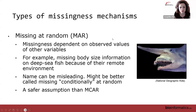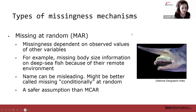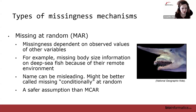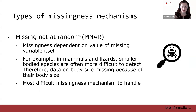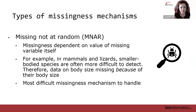An example of missing at random might be if we're missing body size information on deep sea fish because of their remote environment — we're missing it not because of body size but because they're just hard to access and study. There's an opinion in the literature that the name 'missing at random' can be misleading and it might be better called 'missing conditionally at random.' Then we have missing not at random, where missingness is dependent on the value of the missing variable itself. For example, in mammals and lizards, smaller-bodied species are often more difficult to detect, so data on body size are missing because the animals are so small.